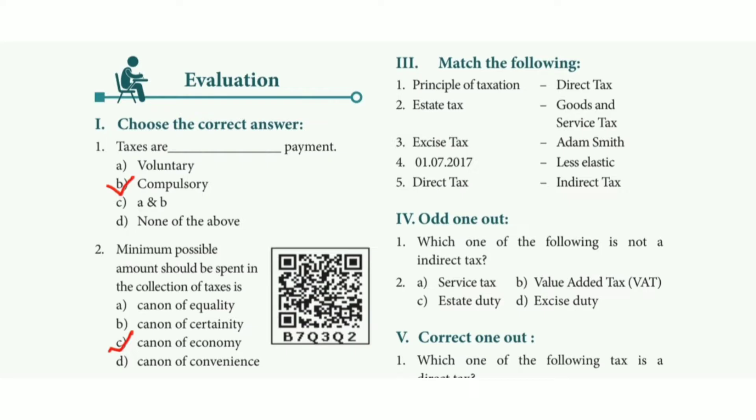Choose the correct answer. First question: tax payments are — the answer is option B, compulsory.